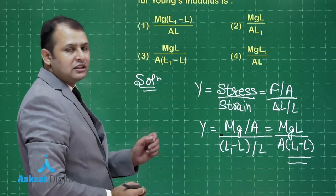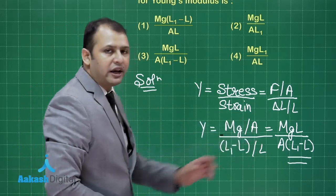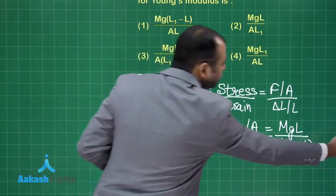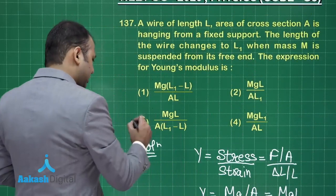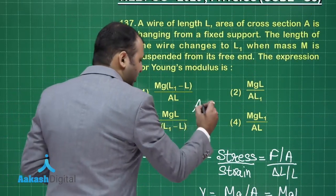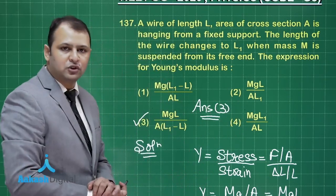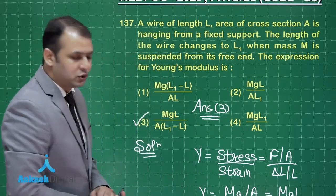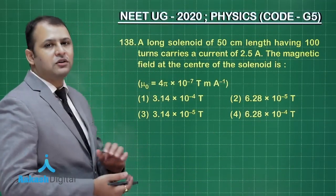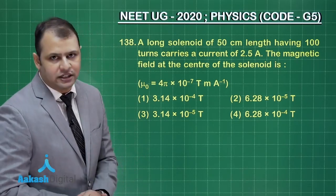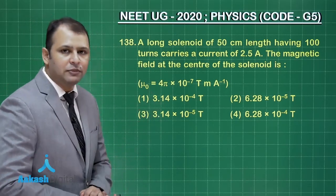So as per this, the answer should be MgL by A bracket L1 minus L and the best suited option for this question is option number 3. So the answer to this question is 3. I hope you have understood this one. Now let us move on to our next question.